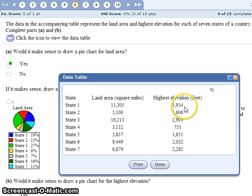And so it wouldn't make sense to split a pie into seven pieces where each of these pieces are supposed to add together to make a whole because that's just not how highest elevation works.